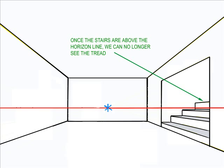Once the stairway is finished, I look at the side of the vanishing point. If the stairs are higher than the horizon line, I can no longer see the treads because now they're above my eye level.